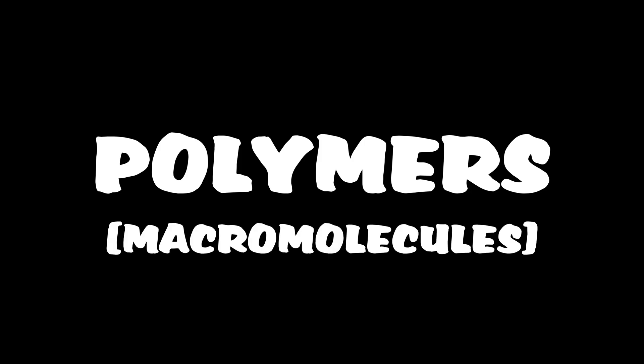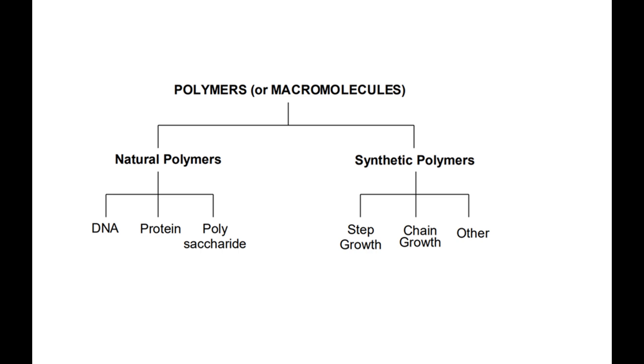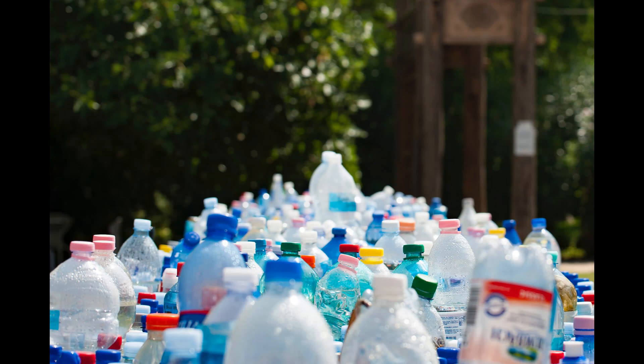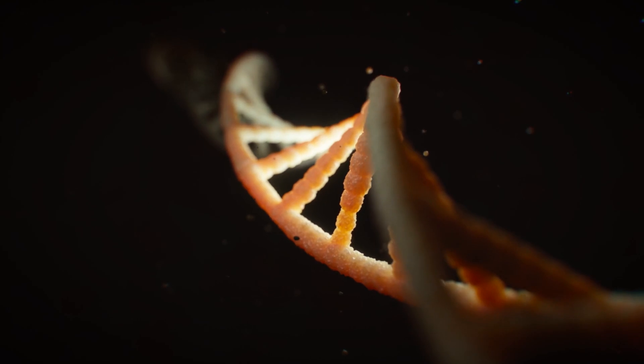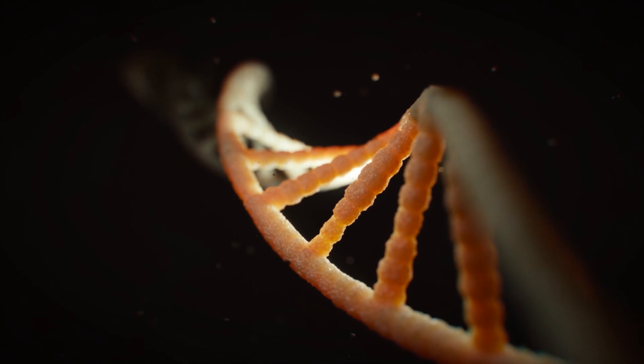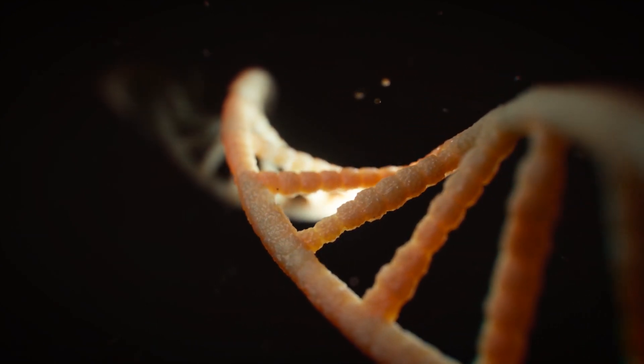Polymers or macromolecules can be divided into two branches, natural polymers and synthetic polymers. Natural polymers include things such as DNA, proteins, cellulose and a huge range of other compounds used to make up most living things.